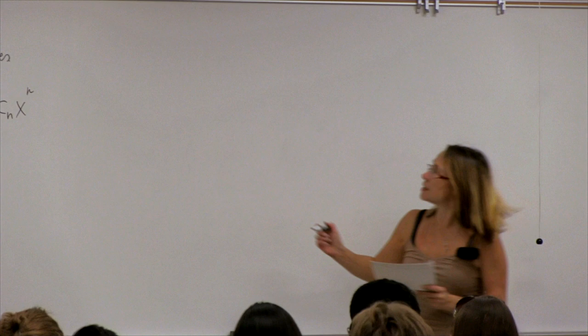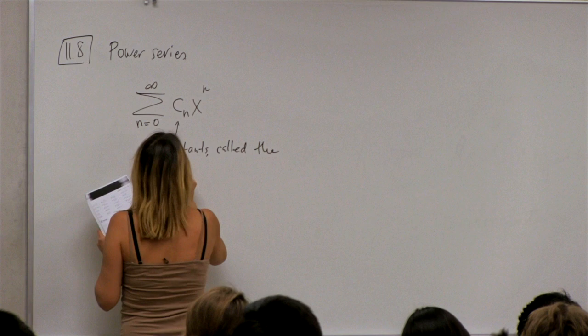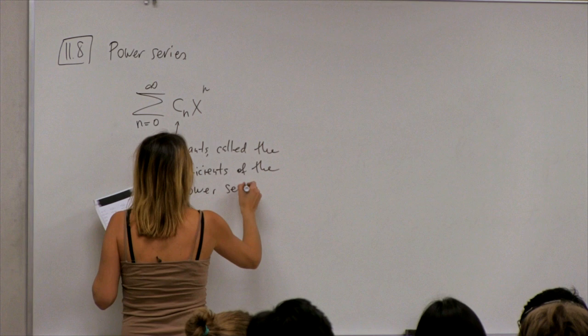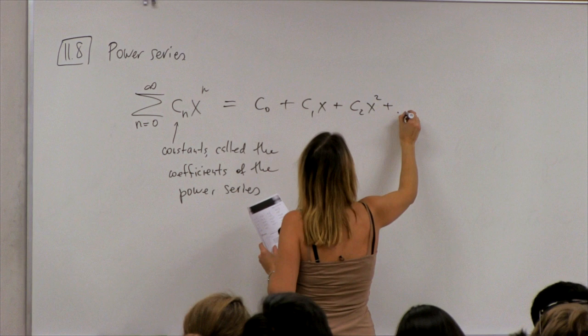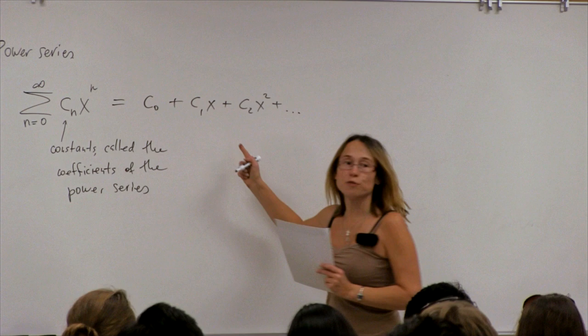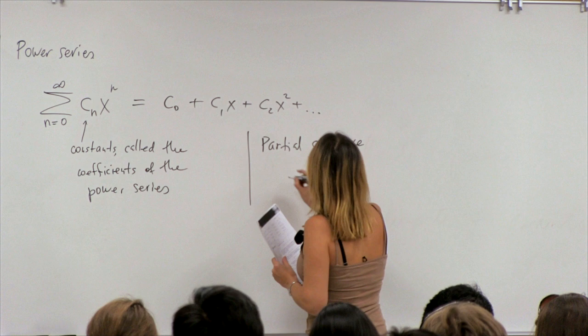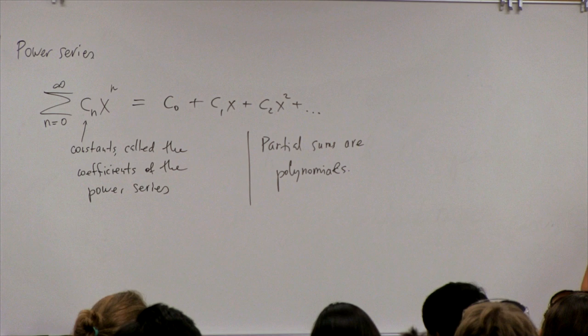The cn are numbers or constants called the coefficients of the power series, and x is a variable. So we have c₀ plus c₁x plus c₂x² and so on. You notice that this is a function of x, and in fact partial sums are polynomials because they contain different powers of x.